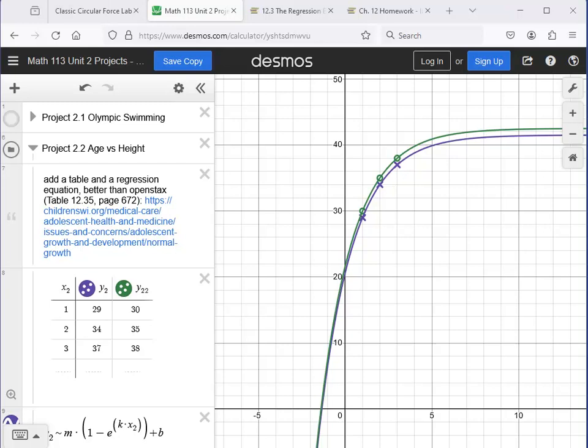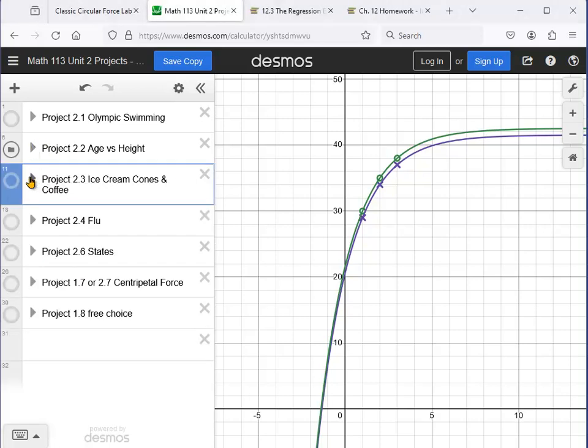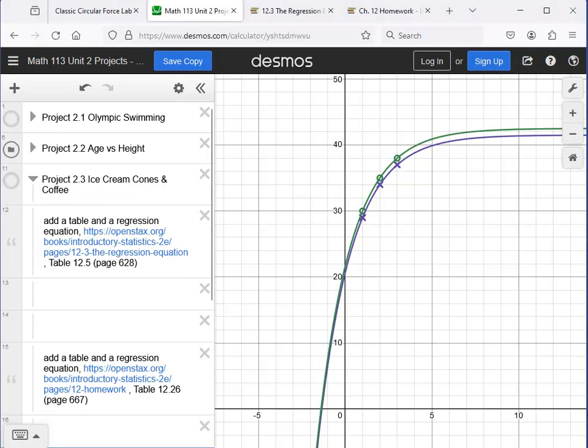So as before, I'd like you to build on the Desmos sheet that you already have. I'm going to close this one here and open the next one here for ice cream cones and coffee. I'm going to turn this one off in just a moment.